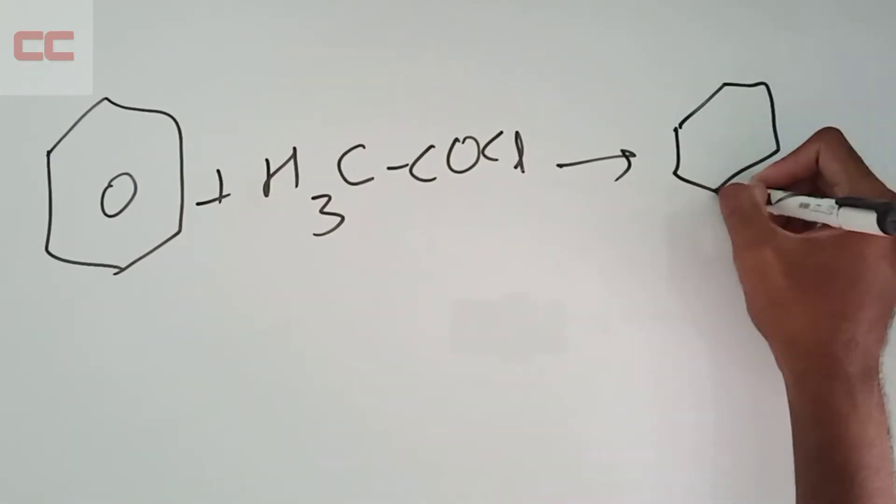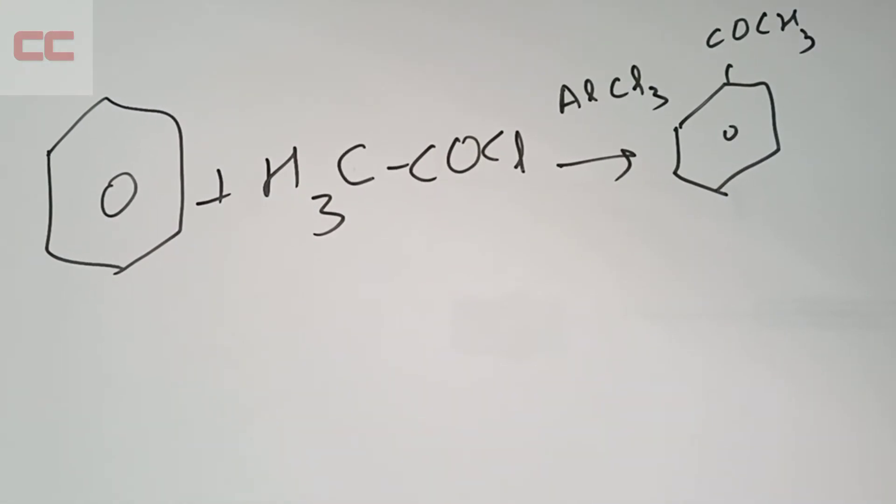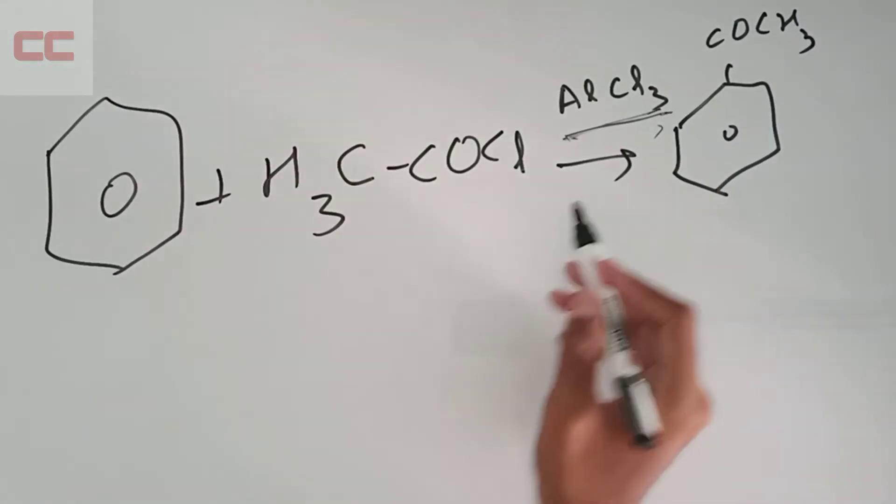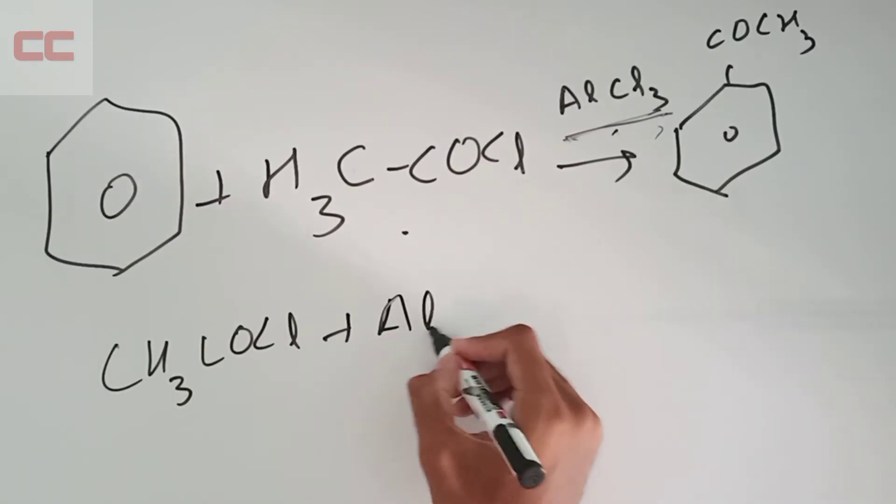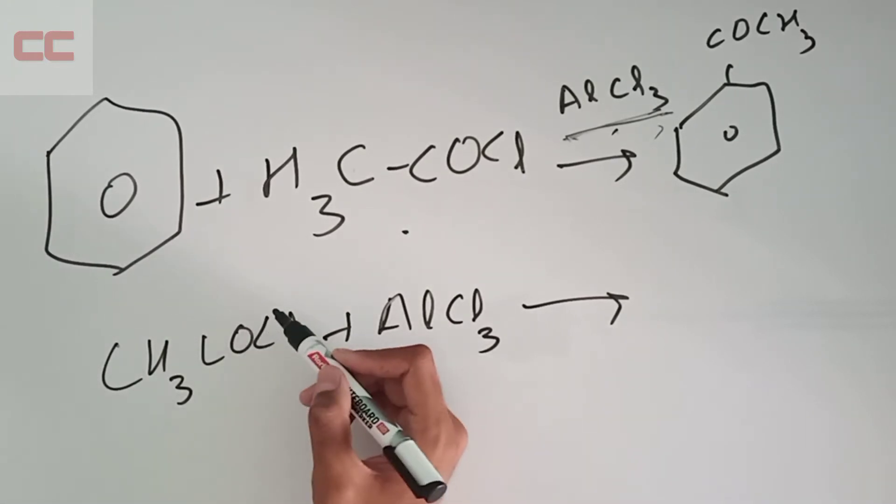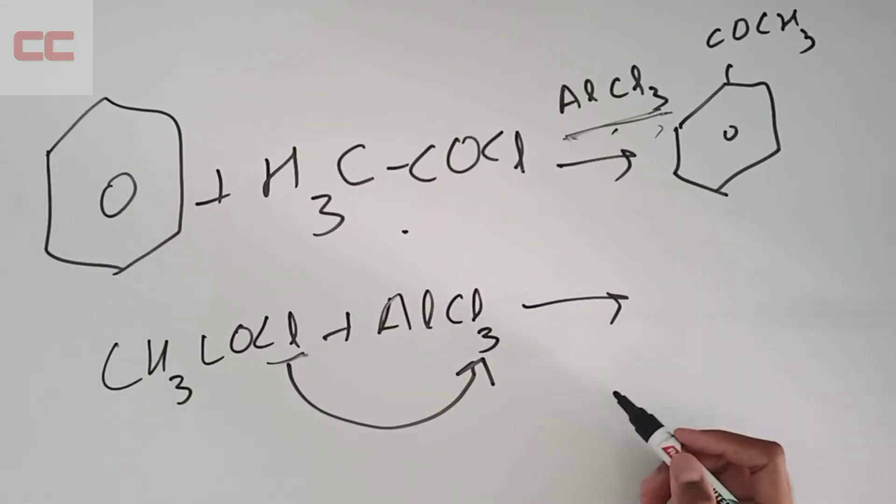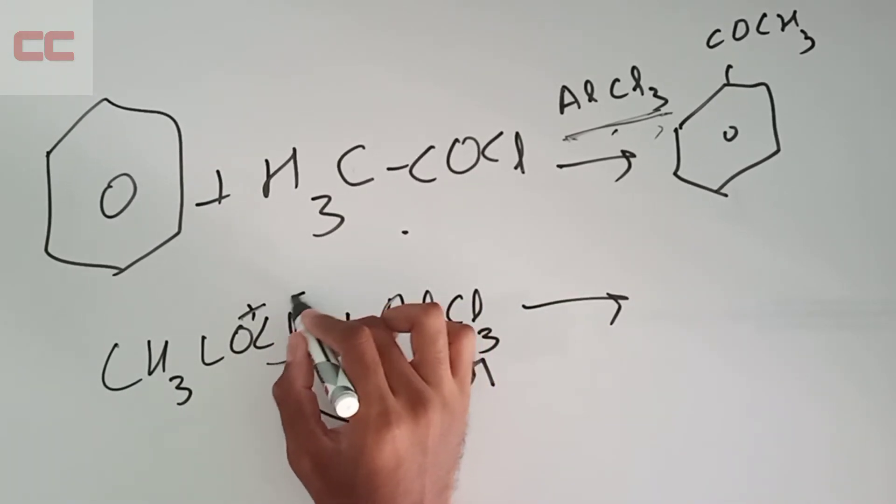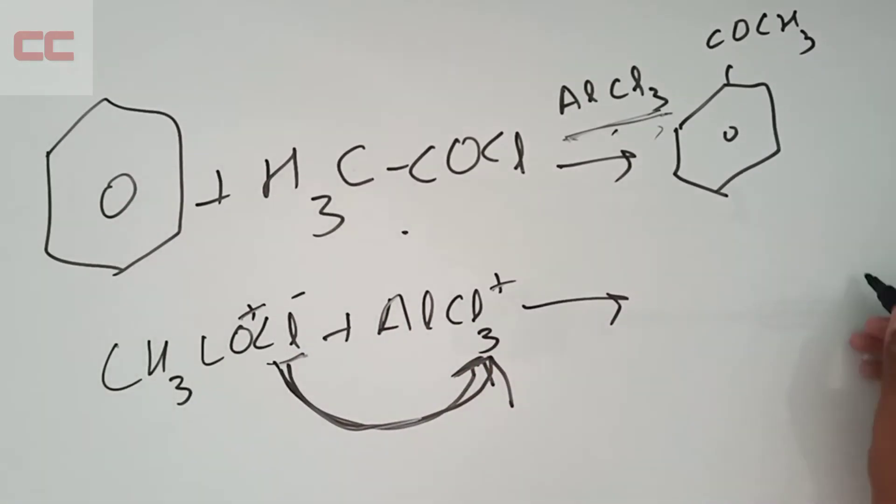The first thing is that benzene reacts with CH3COCl in the presence of AlCl3. This AlCl3 is very important because it's going to react with CH3COCl. What happens is that this AlCl3 and this CH3COCl - the chlorine comes and attaches to this AlCl3, and then CH3CO becomes plus because it has lost something.